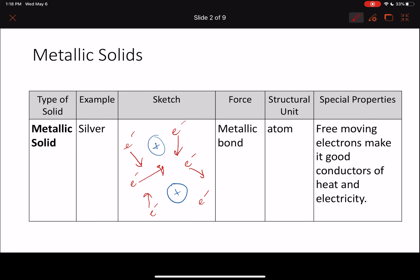The force that holds together a metallic solid is a metallic bond. The structural unit for a metallic bond is an atom. The structural unit is the smallest piece of that type of solid. Some special properties of metallic solids: because we have these free-moving electrons that are not bound to a particular nucleus, metallic solids can be really good conductors of heat and electricity because these electrons can move freely.